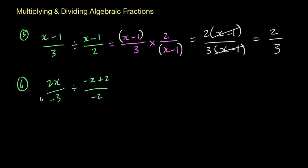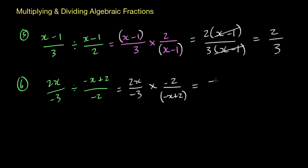For this last example we repeat the same process, but with a few negatives. We start with 2x over −3, divided by a fraction. Turn the division into multiplication and get the reciprocal: −2 goes to the top and (−x + 2) goes to the bottom, placing brackets there since −3 multiplies across both values. Multiplying the top: 2x times −2 gives −4x. On the bottom: −3 times −x gives +3x, and −3 times +2 gives −6. So the final answer is −4x over (3x − 6).